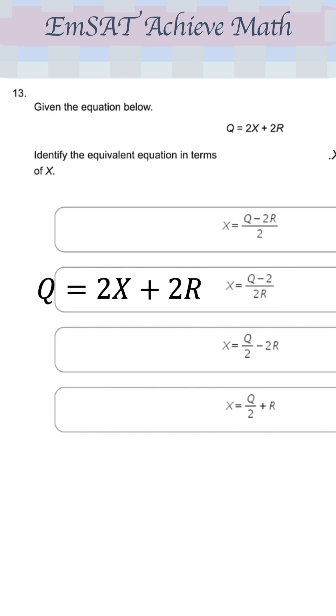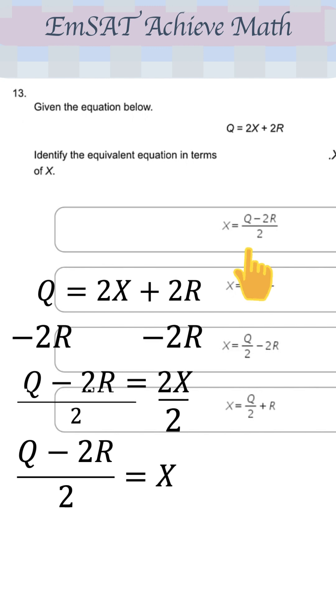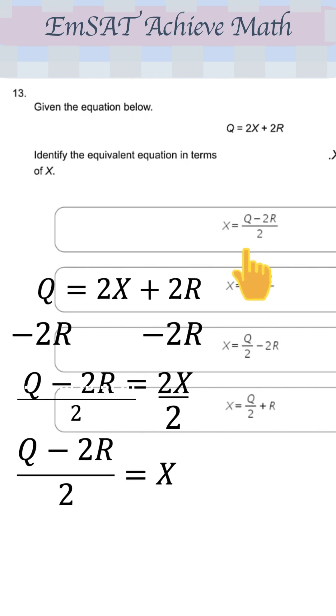So to get X alone, we move 2R into the other side. We put minus 2R minus 2R. It becomes Q minus 2R equals 2X. And to get X alone, we divide by 2 on each side of the equation. Then you get X equals Q minus 2R over 2, which is choice A.